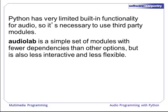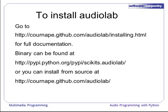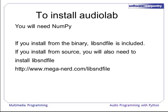AudioLab is a simple set of modules with fewer dependencies than other options, but is also less interactive and less flexible. To install AudioLab, go to the link listed here for full documentation. You can also find binaries at PyPI, or install from source from the GitHub repository. In order to install AudioLab, you will need NumPy. If you install from the binary, the libsndfile library is included, but if you install from source, you will need to install libsndfile separately. A link to download libsndfile is included.